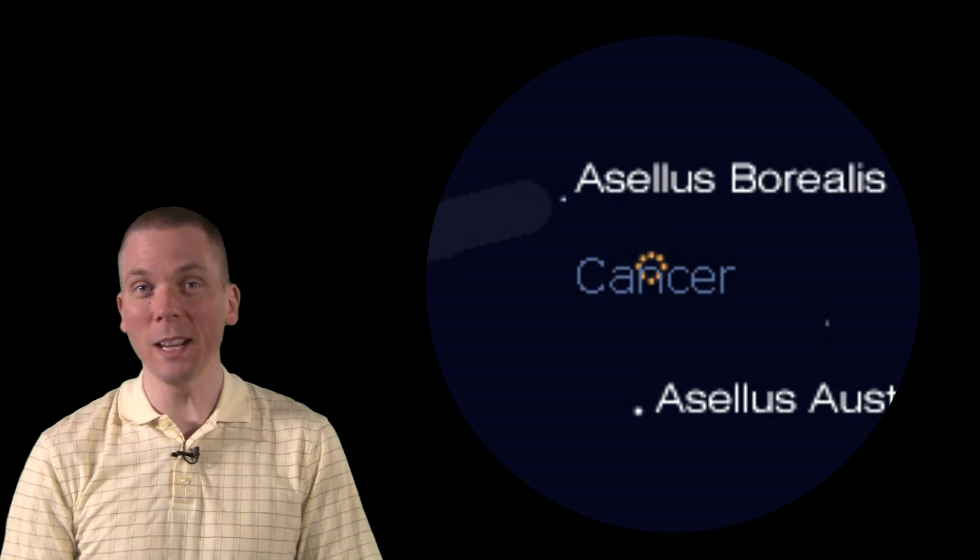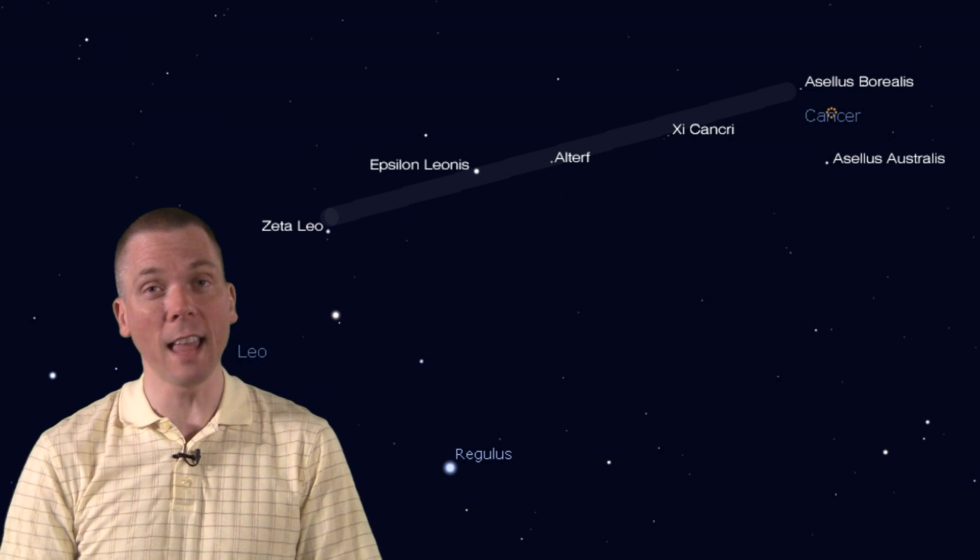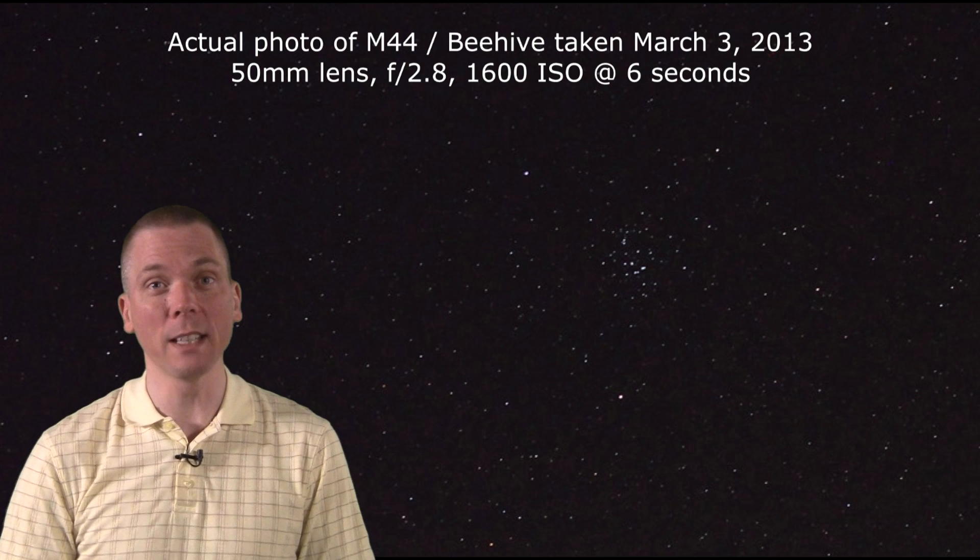But what lies in between them is what's magnificent. You've just found where the beehive is. Sometimes it's also known as the praesepe, or a Latin word for manger. Now this cluster is huge. It spans 95 arcminutes of sky, which is 3 full moon diameters across.